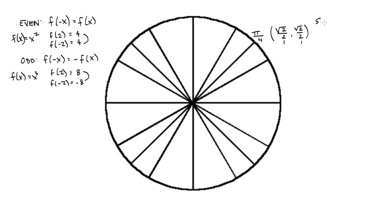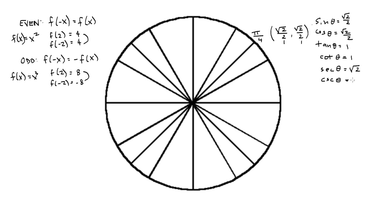My cotan is also going to be 1. So to summarize: sine of theta is radical 2 over 2, cosine is radical 2 over 2, tangent is 1, cotan is 1. My secant, which is the reciprocal of cosine, is 2 over radical 2, which turns out to be radical 2. And my cosecant, which is also 2 over radical 2, is radical 2. So that is what we get when we put in the positive angle — in this case, theta is positive pi over 4, at this point right here.